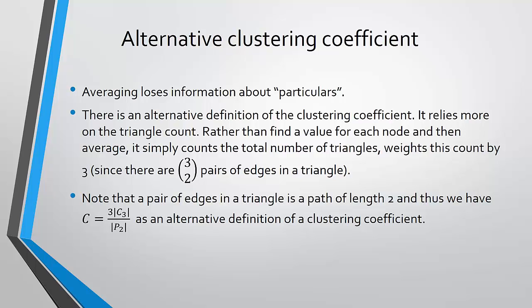Where is the 3 in the numerator coming from? We're really looking to count the number of paths that occur in a triangle with respect to all paths of length 2. How many paths of length 2 can you find in a triangle? That would be 3-choose-2, so there are 3 distinct paths of length 2 in a triangle.